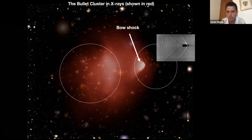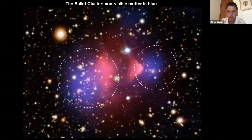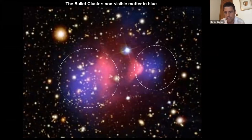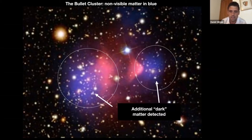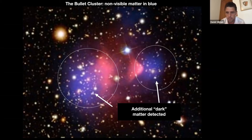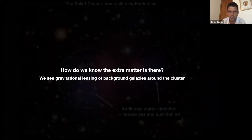What gets interesting is if you make a map of where the mass is — not necessarily where the gas and dust is, but where the majority of the matter is. If you do that and color the missing mass blue, you see these blobs of blue that are leading the X-rays. This is additional matter — we know it's there, but it has no luminous counterpart. It happens to align with the galaxies, but we know there's way more mass there than we can account for with just the galaxies. There seems to be some missing material there.